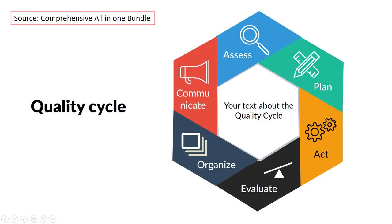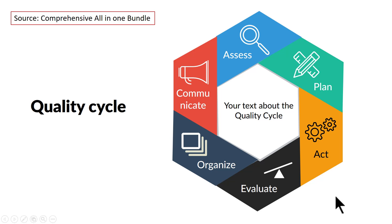Now we have this slide and let us say I want to point out to this particular stage of the quality cycle — the Plan stage. Now there are two ways in which presenters commonly point out to a certain part of a slide. The first way is for the presenter to walk in front of the screen and use their hand to point out to a certain part of the graphic. It is unprofessional for two reasons. One, when you walk in front of the screen, you become part of the screen — some text and parts of the graphic will be projected on your face and body.